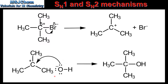In the second step of the mechanism the nucleophile forms a bond with the carbocation. Note the use of a curly arrow which shows a movement of a pair of electrons from the oxygen atom. The nucleophile uses this lone pair of electrons to form a bond with the carbocation. This results in the formation of the product, which is a tertiary alcohol.